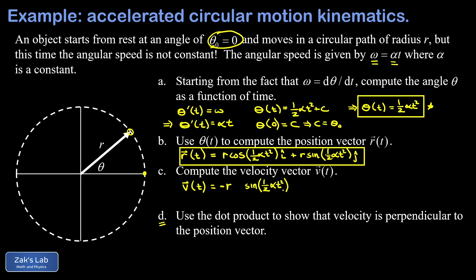The derivative of the cosine with respect to its argument gives us a negative sine. So I'm going to start by writing negative r and then sine, leaving some space. I have one-half alpha t squared, and I left space because of the chain rule. I have to tack on the derivative of this interior function, which gives alpha t. So I have negative r alpha t sine one-half alpha t squared for the i hat component. A similar thing happens with the j hat component: r alpha t cosine one-half alpha t squared times j hat.